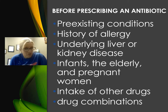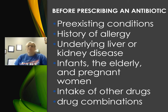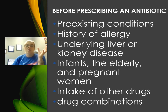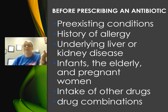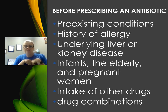Before prescribing an antibiotic, patient history is very important. We need to know pre-existing conditions: Is there a history of allergies? Underlying kidney disease? Is the patient pregnant, elderly, or very young? Are they taking other medications? Probiotics are often recommended to prevent diarrhea when taking antibiotics, especially for patients susceptible to GI issues like irritable bowel. Some drugs have synergistic effects and may need a reduced dose. Elderly patients often metabolize things differently, affecting dosage.